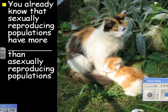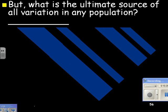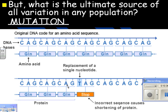Sexually reproducing populations have more diversity — or variation — than asexually reproducing populations. But what is the ultimate source of variation in any population? Mutation. For example, here's a DNA code, and if the C gets replaced with a T, now you have a totally different protein. That's a mutation — any change in the DNA.